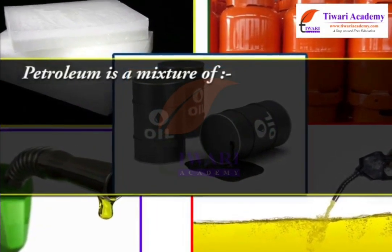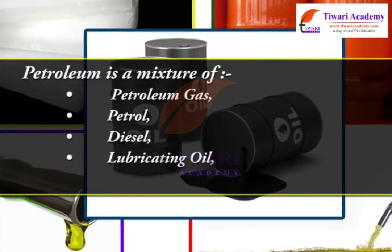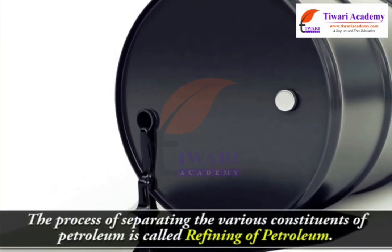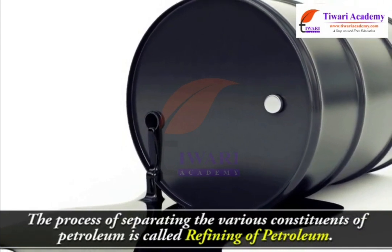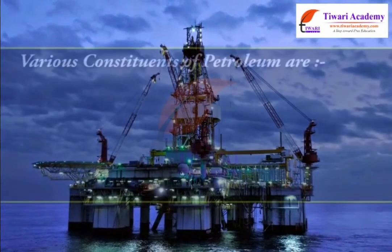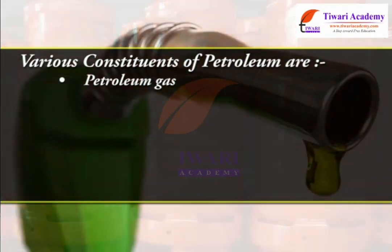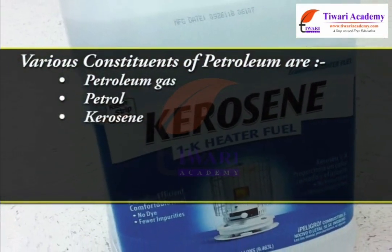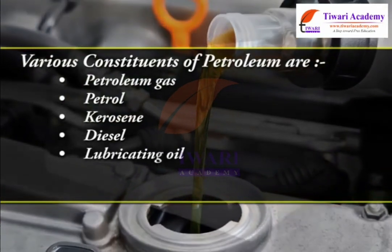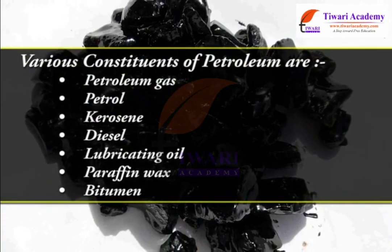Petroleum is a mixture of petroleum gas, petrol, diesel, lubricating oil, and paraffin wax. The process of separating the various constituents of petroleum is called refining of petroleum. Various constituents of petroleum are petroleum gas, petrol, kerosene, diesel, lubricating oil, paraffin wax, and bitumen. These components are very useful.